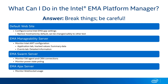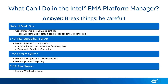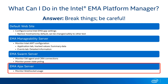The other two components listed are the EMMA Swarm Server and the Ajax Server. The Swarm Server gives you the ability to monitor the software agents and CIRA connections back to your Intel Endpoint Management Assistant instance. It's also where you'll see logging information for power state polling from the Intel EMMA server to your devices. The EMMA Ajax Server is mainly used by developers to monitor web socket connections to your environment.